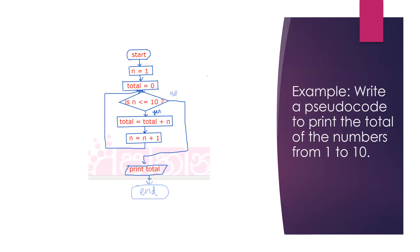To calculate the total we start with a variable called total. Instead of 'number' we use a variable n, where n goes from 1 to 10. Each time through the loop, instead of printing we calculate the total: total equals total plus n. After the loop finishes, we print total.